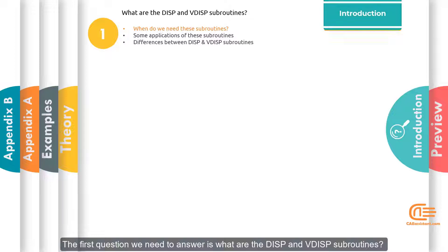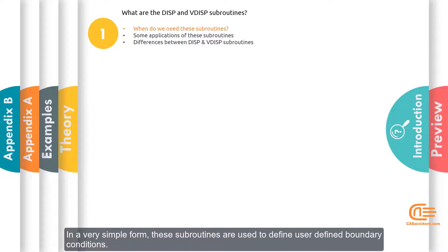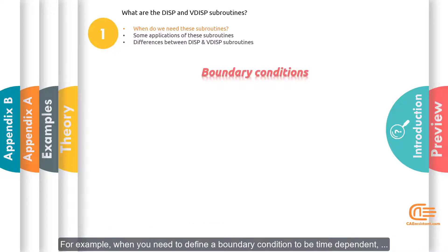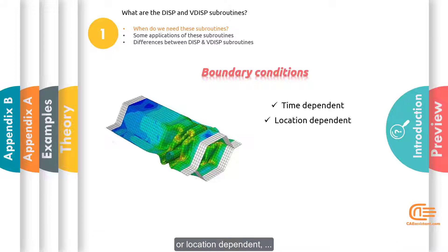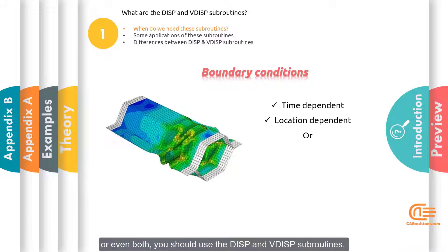The first question we need to answer is: what are the DISP and VDISP subroutines? In a very simple form, these subroutines are used to define user-defined boundary conditions. For example, when you need to define a boundary condition to be time-dependent, or location-dependent, or even both, you should use the DISP and VDISP subroutines.